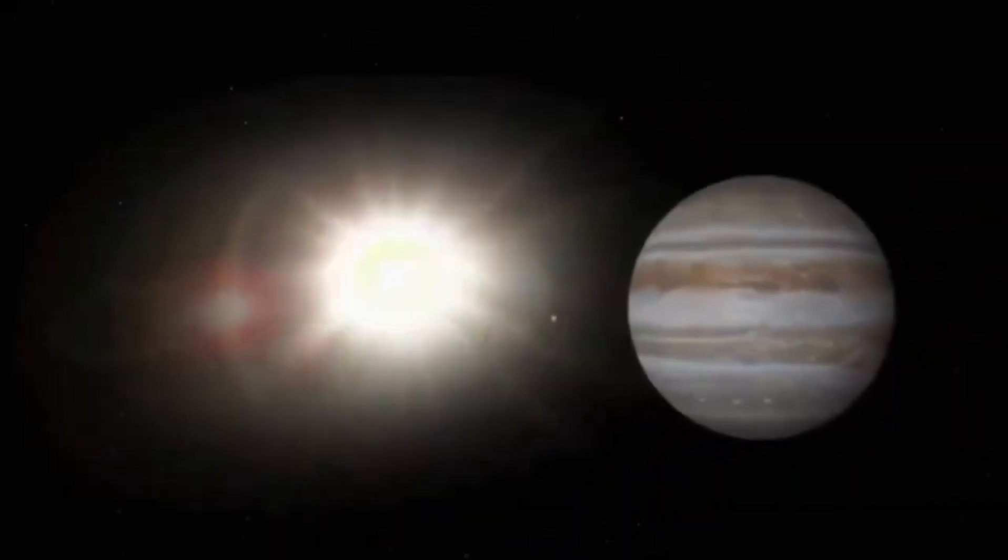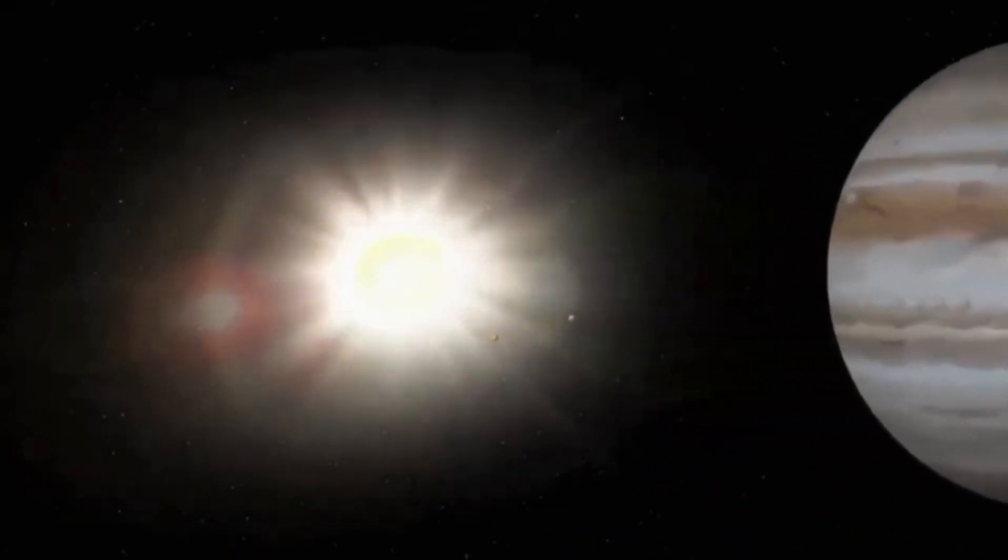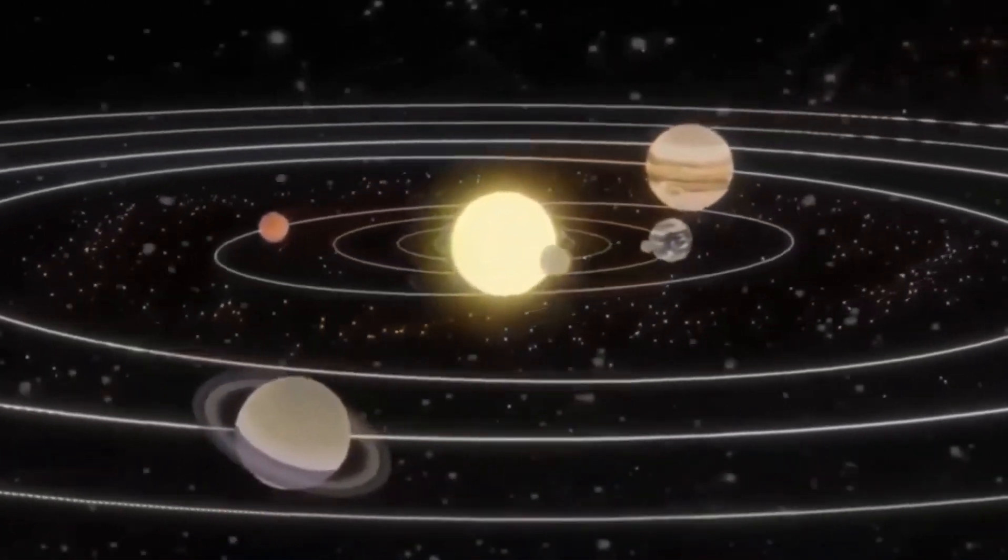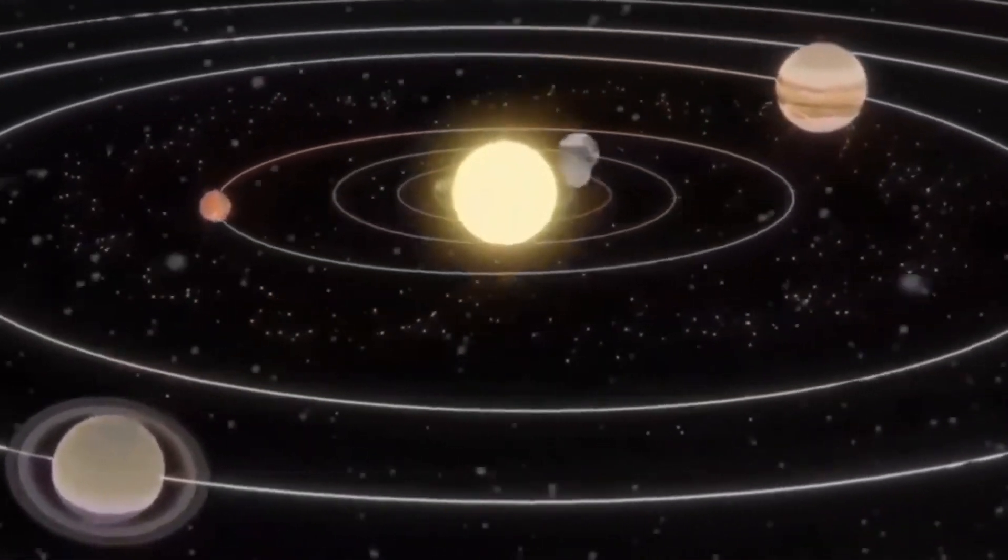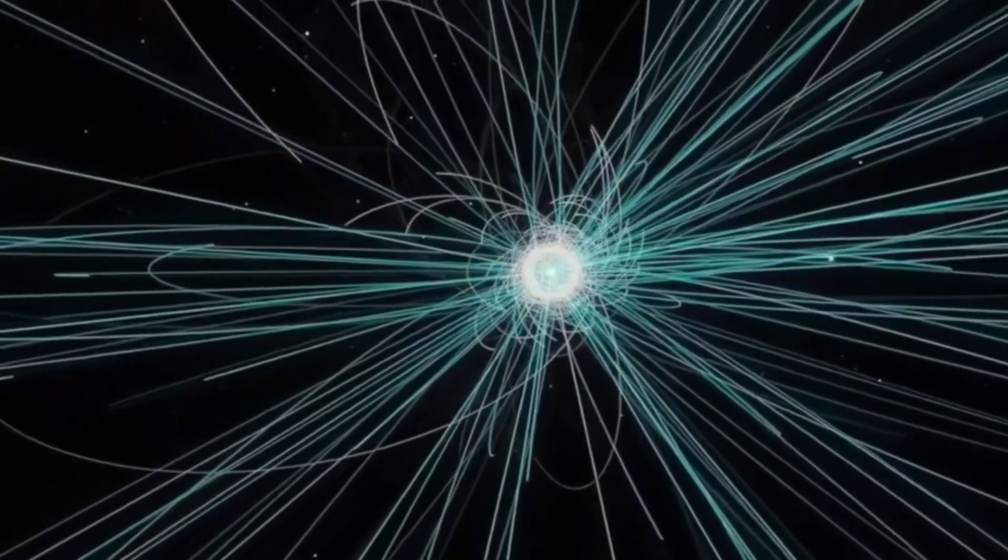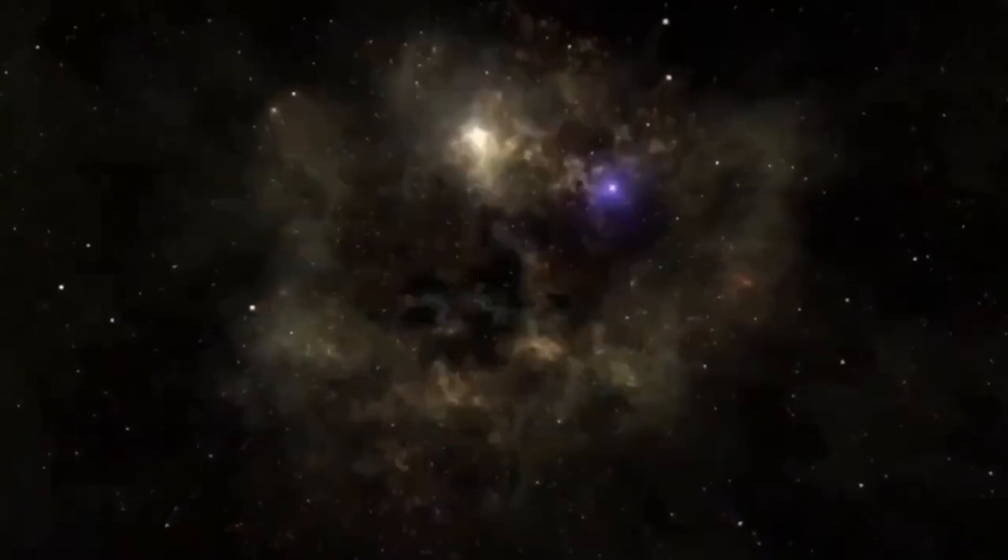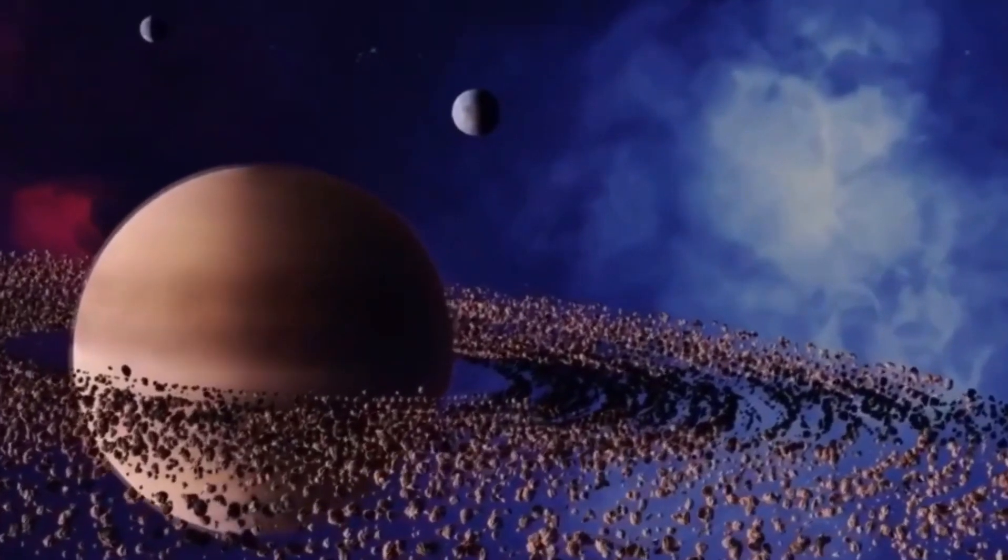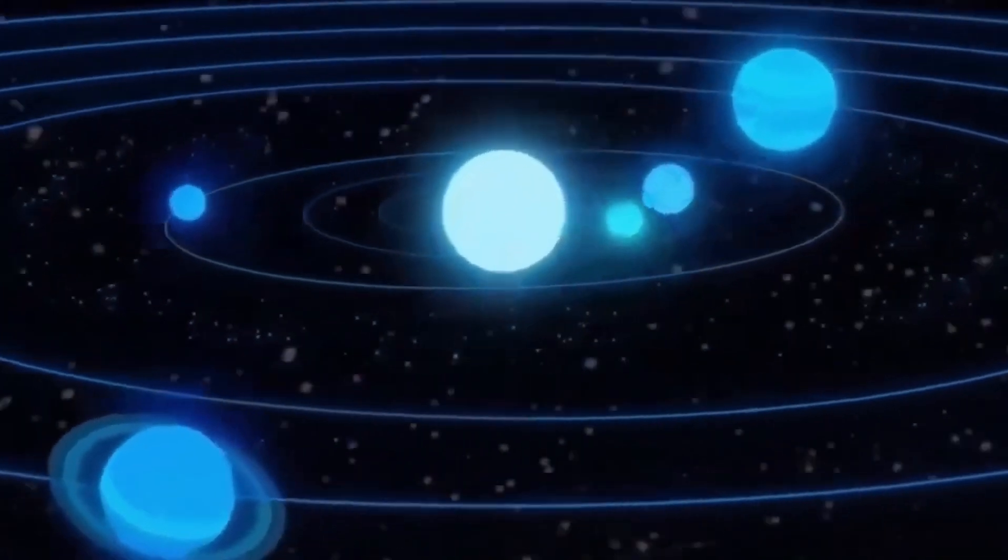Instead, the scientists found a new dark spot in the northern hemisphere. The fact that this also disappeared after only a few years showed that the enormous storms dominating Neptune's surface are far more short-lived than those of Jupiter. On its surface, the storm known as the Great Red Spot has been raging for centuries and in exactly the same place.